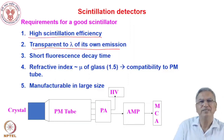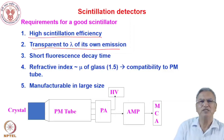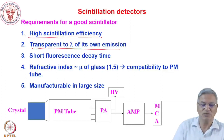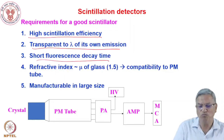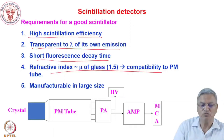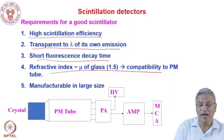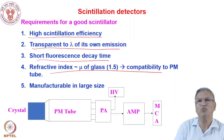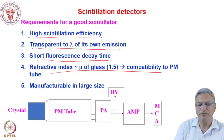The second important property is that the fluorescence decay should be fast so that all the light is generated in a very short span of time. Otherwise, if it is a phosphorescent material, the light will be produced very slowly and we may not be able to integrate the collected charge. Short fluorescence decay time — typically a few nanoseconds to a few microseconds. Thirdly, to make it compatible with the PMT, the refractive index of the crystal should be of the same order as glass — about 1.5 — because the PMT has a glass window. Sometimes UV radiation is emitted, requiring UV-transparent PMT windows.